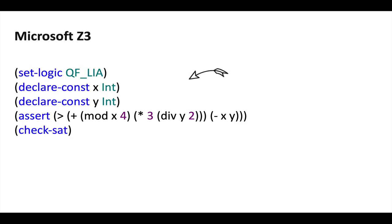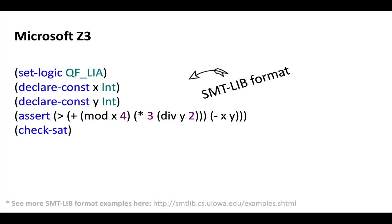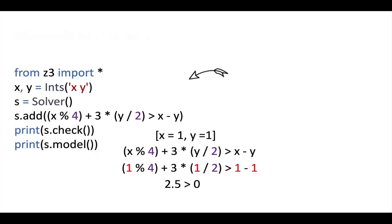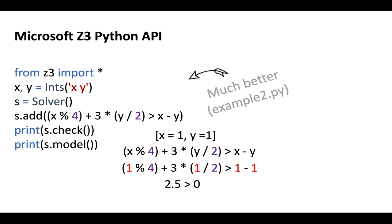Microsoft's Z3 takes its input in something called SMT-lib format, which is sort of Lisp-like. You can read more about it at the University of Iowa's website. However, this isn't very intuitive, so it's probably better to use Microsoft Z3's Python API, where we can use Python expressions and syntax to solve specific problems much more easily.